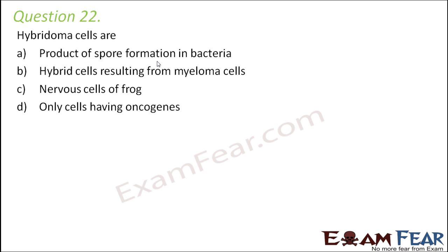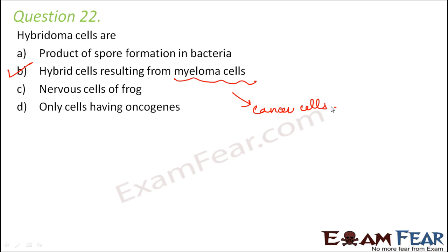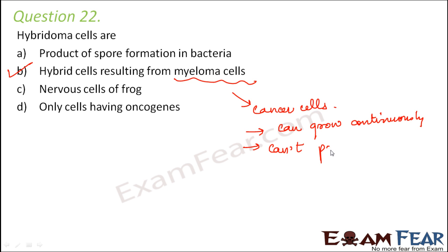Question number 22: hybridoma cells are — a product of spore formation in bacteria, hybrid cells resulting from myeloma cells, nervous cells of frog, or only cells having oncogenes? The correct option is hybrid cells resulting from myeloma cells. Myeloma cells are cancer cells capable of continuous growth but have lost the ability to produce antibodies. They can grow continuously but cannot produce antibodies.